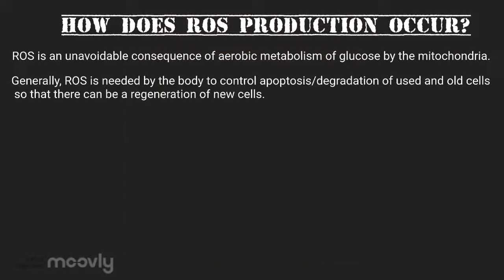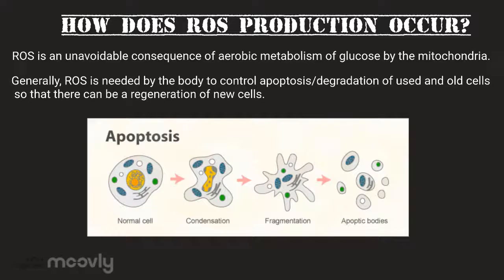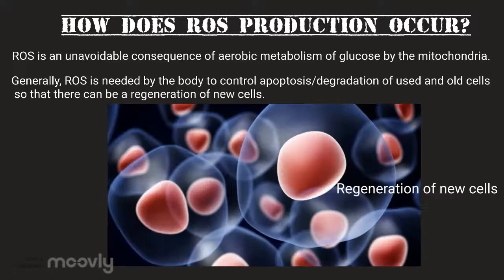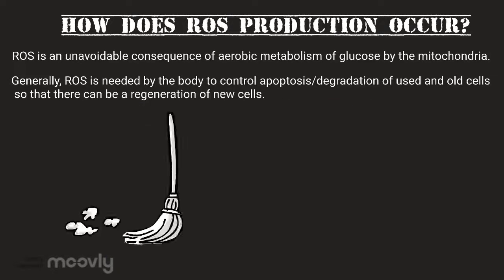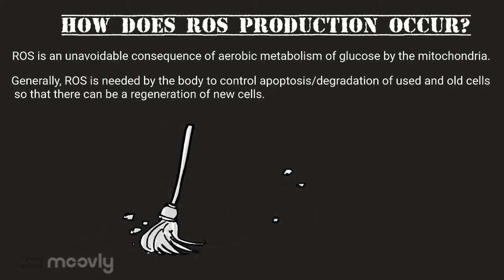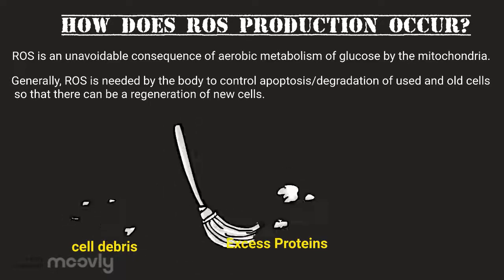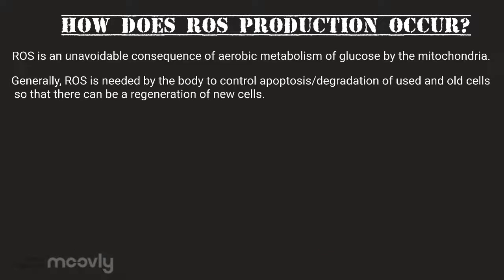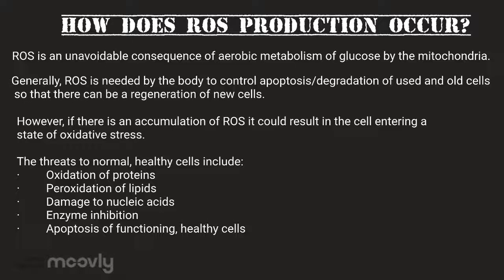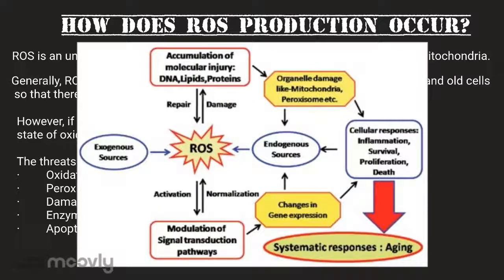Generally, ROS is needed by the body to control apoptosis, or degradation of used and old cells, so that there can be regeneration of new cells. In addition, they are needed to get rid of damaged cells, excess proteins, and more, therefore leading to more space for new cells. However, if there is an accumulation of ROS, it could result in the cell entering a state of oxidative stress.